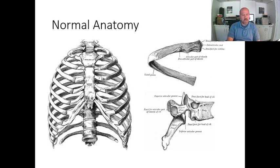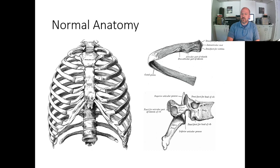Starting with normal anatomy — this may be pretty obvious — but we have a lot of bony anatomy in the chest: all the ribs, sternum, manubrium, and of course the thoracic spine as well. There can also be anatomic variants, like cervical ribs and things of that nature.